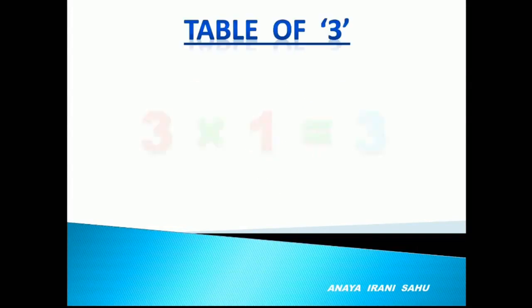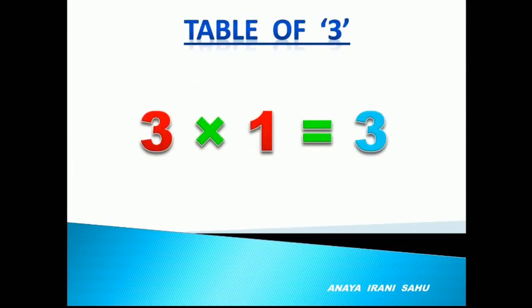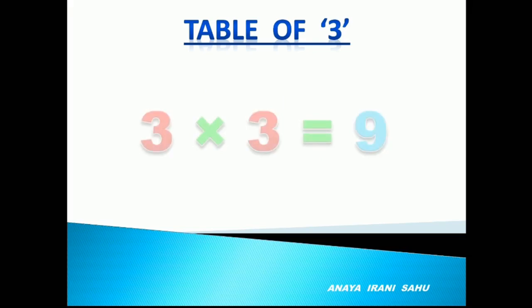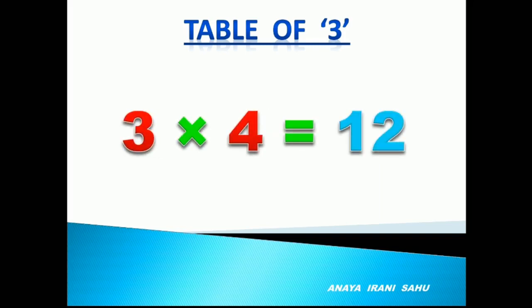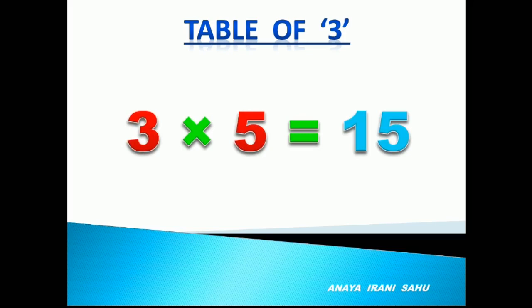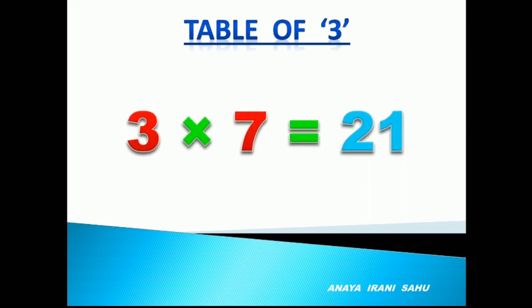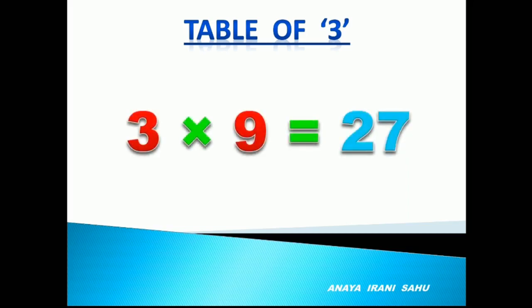3 1's are 3, 3 2's are 6, 3 3's are 9, 3 4's are 12, 3 5's are 15, 3 6's are 18, 3 7's are 21, 3 8's are 24, 3 9's are 27, 3 10's are 30.